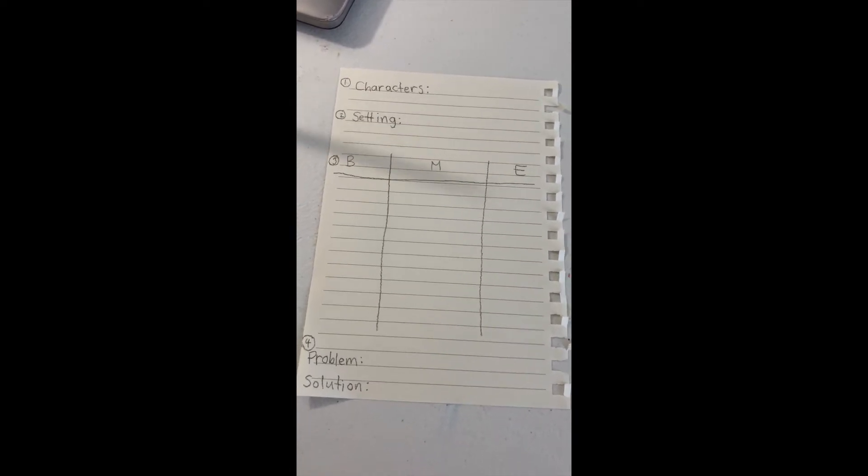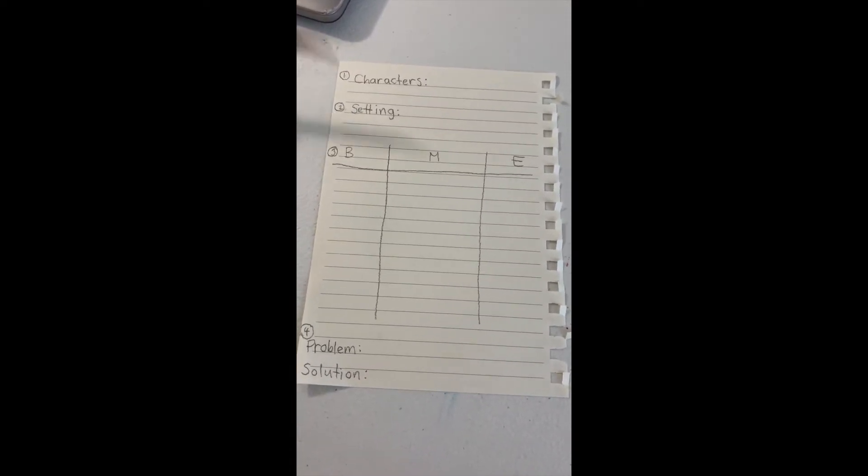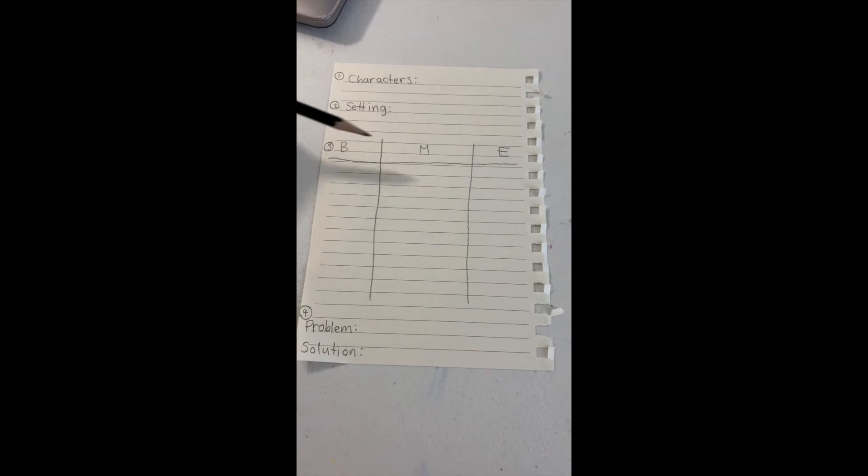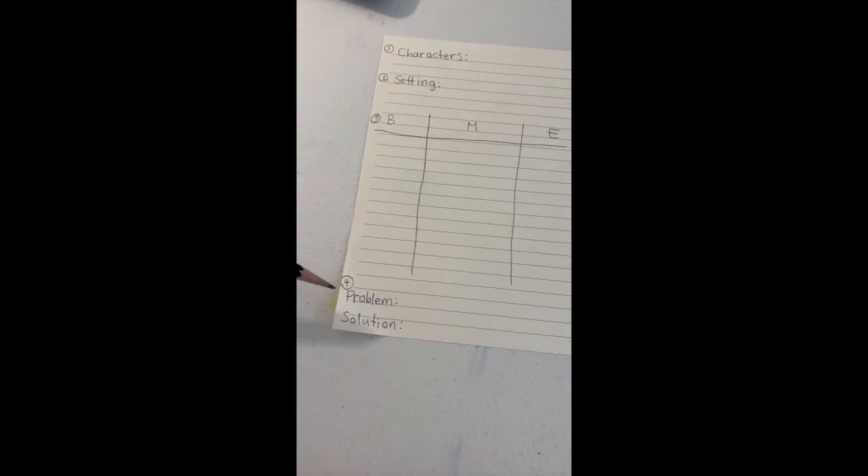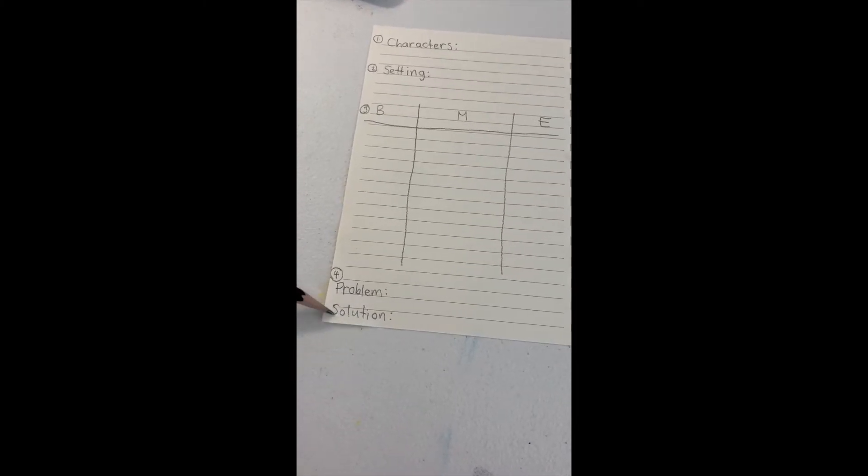Here, you can see where I'm planning my story. We have number one, characters. Number two, settings. Number three, the beginning, middle, and end of the story. And number four, the problem, and the solution, how we fix it.